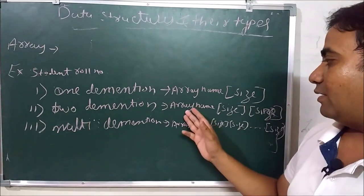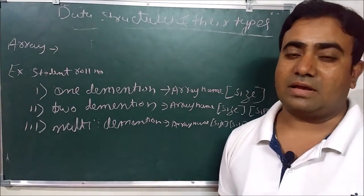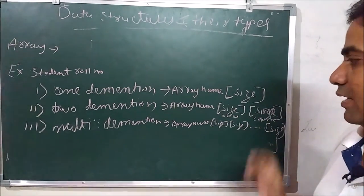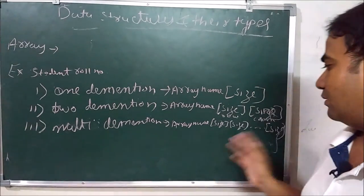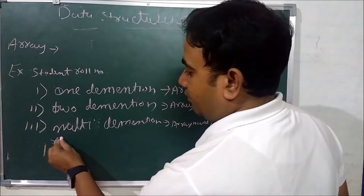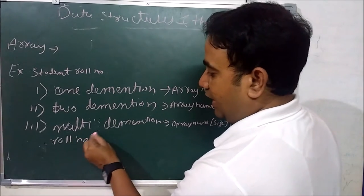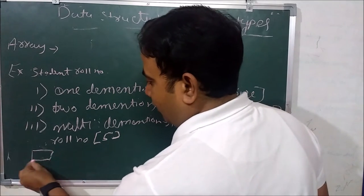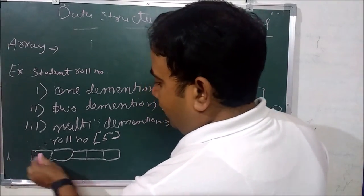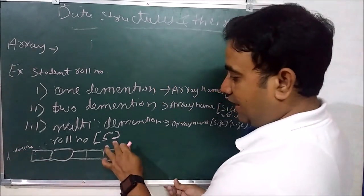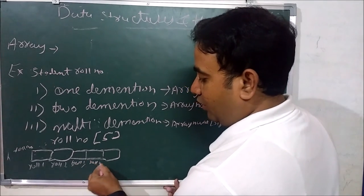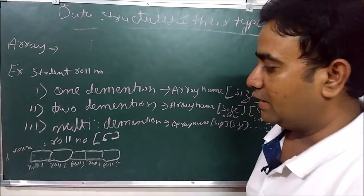Two-dimensional arrays support a matrix form with rows and columns. For example, suppose array name is 'roll number' and size is 5, then we have: roll number 1, roll number 2, roll number 3, roll number 4, and roll number 5. This is an example of a one-dimensional array.